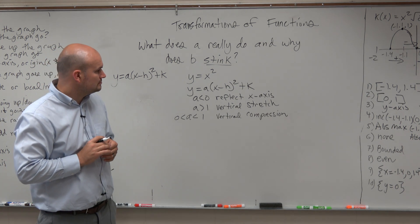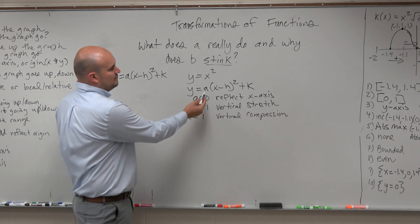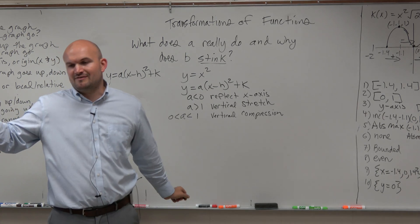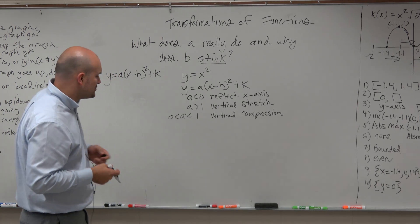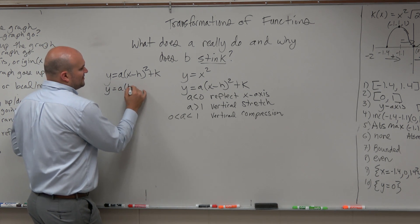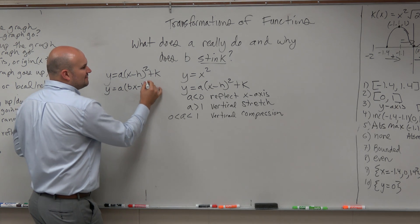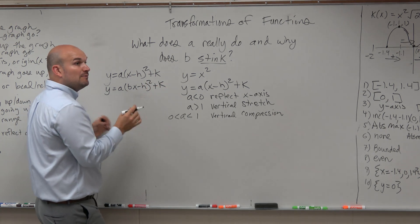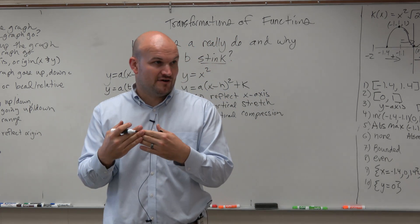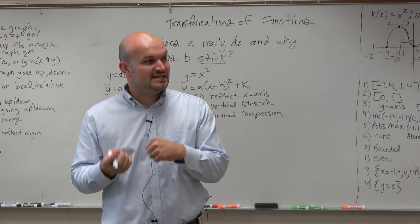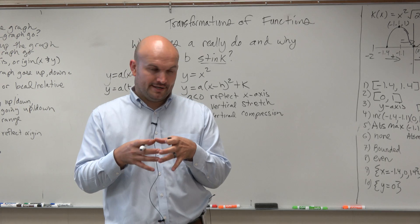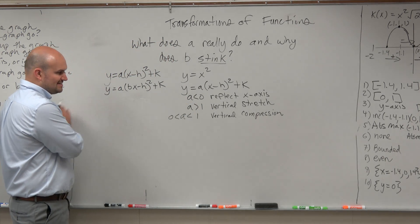A student asked: what if A equals 0? Well, if A equals 0, then all of that equals 0 and we're just left with k, which is just a number — a constant line, so you won't have a parabola or a quadratic anymore. So where does B fit? B is going to be multiplied by the x inside the function. A was outside the function; B multiplies your variable on the inside of the function.